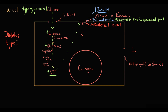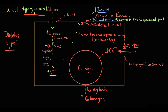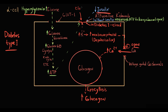If potassium channels are closed, potassium ions remain inside the cell, membrane potential increases, the cell depolarizes, depolarization activates calcium channels, calcium channels open, calcium goes into the cell and induces exocytosis of glucagon into the blood. In diabetes type 1, despite hyperglycemia, potassium channels cannot remain in the open state for a prolonged period of time because of low insulin level. This results in a paradoxically high glucagon level during hyperglycemia.